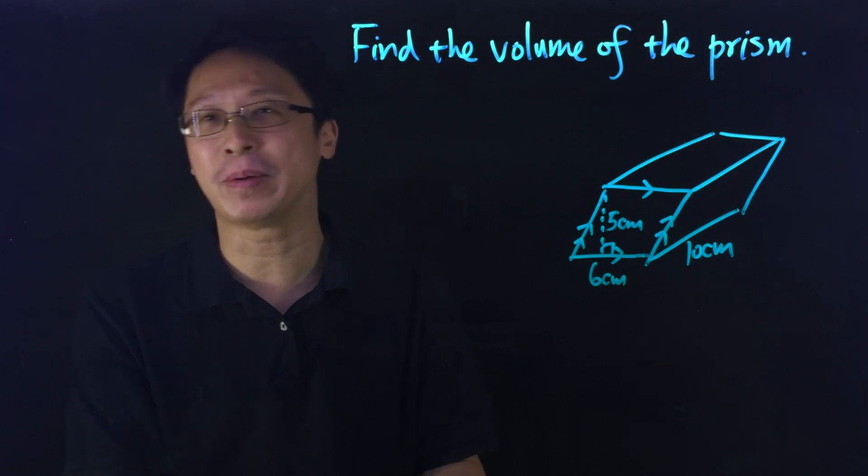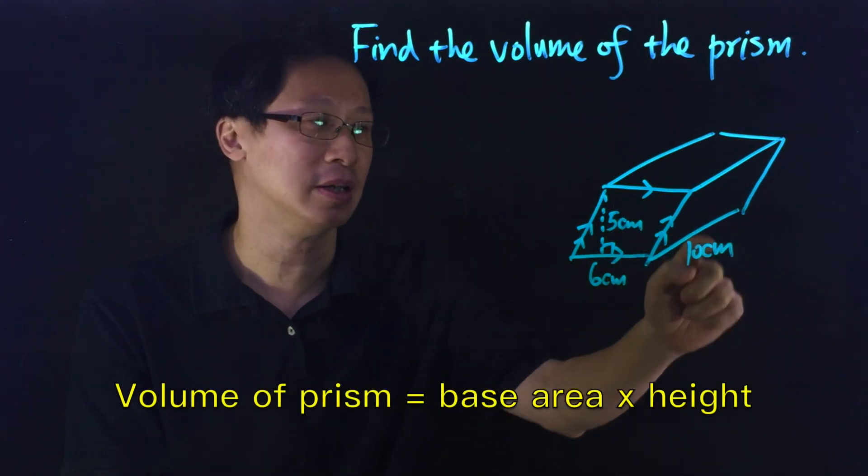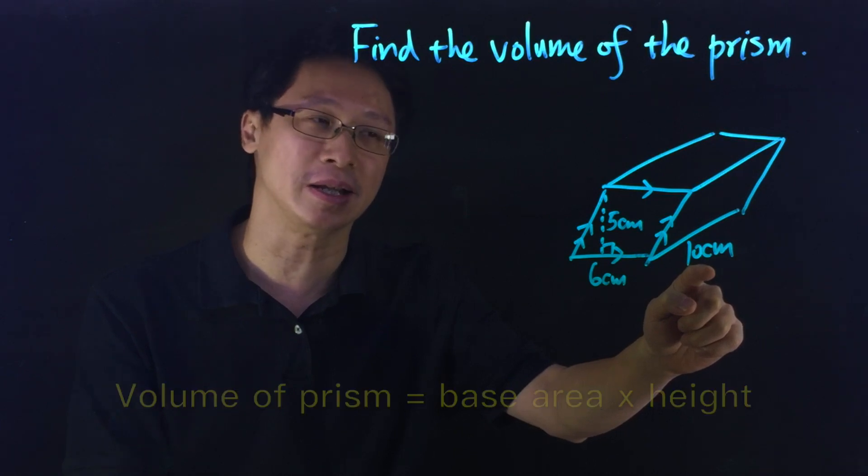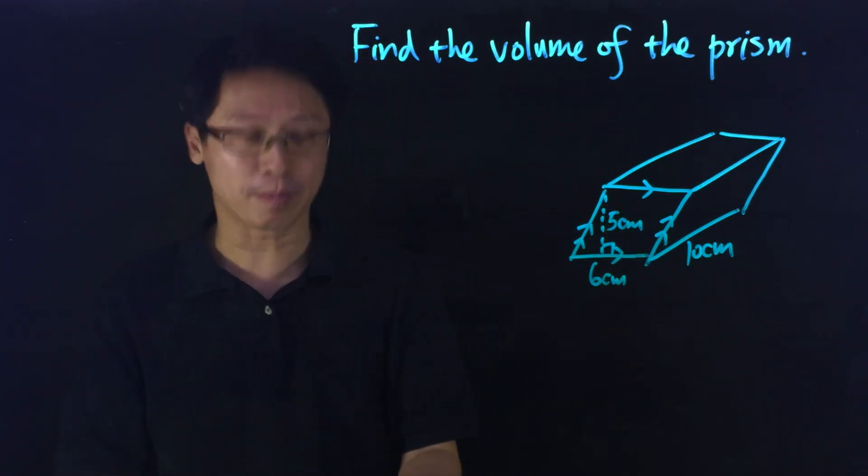Remember, the volume of a prism is given by the base area times the height. In this case, the height is 10 cm and the base area will be the area of this parallelogram.